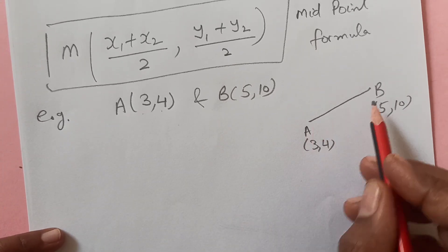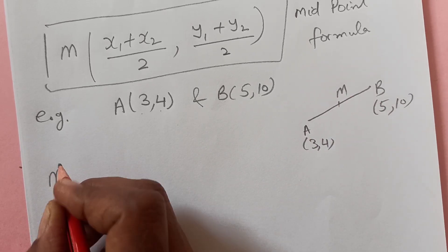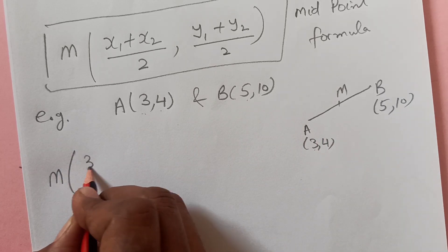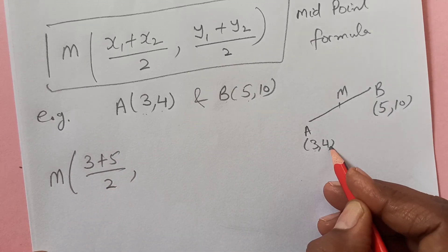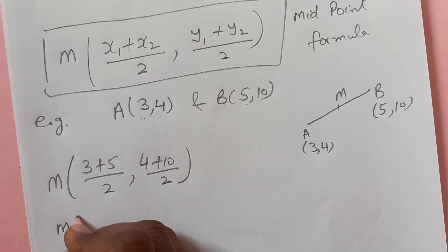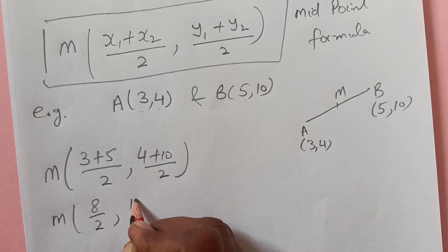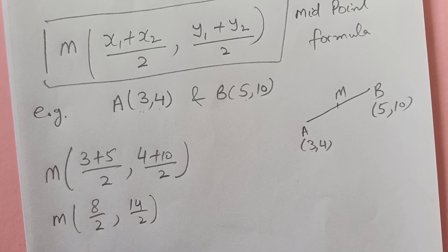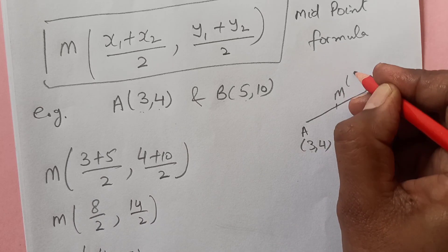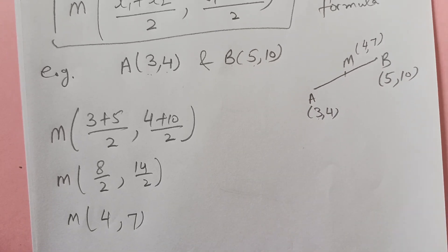So now we are looking for the midpoint. M is at x1 plus x2 over 2, y1 plus y2 over 2 — that is 3 plus 5 over 2, then 4 plus 10 over 2. Simplifying: 8 over 2 is 4, and 14 over 2 is 7. So coordinates of M are (4, 7), which is in the middle of A and B.